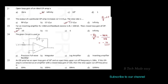Next question: here is a circuit with an op-amp. The circuit contains a diode. What is the output of this circuit? The options are: a precision full-wave rectifier, an inverting circuit, or a logarithmic amplifier, or an inverting amplifier.